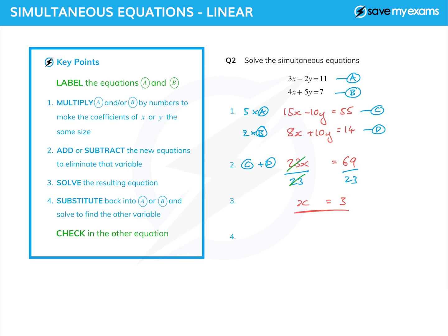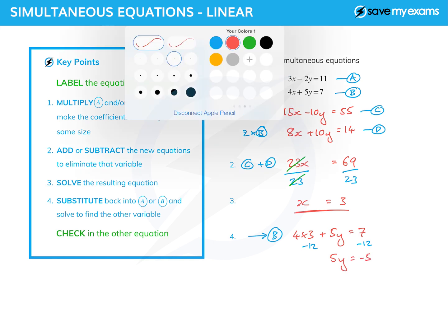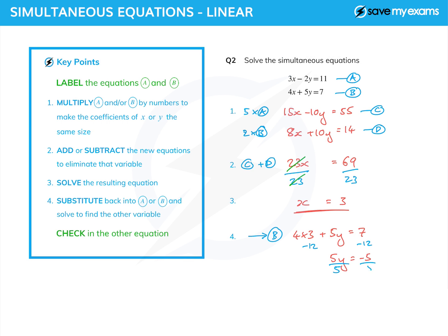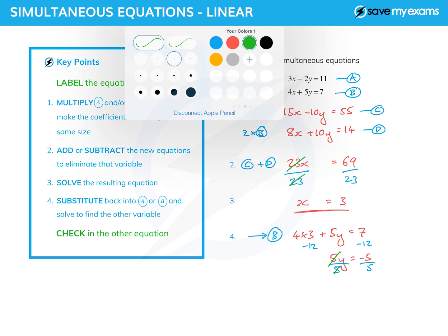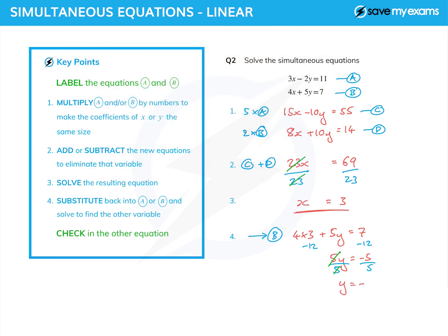And then I need to substitute something into one of my original equations. And I'm substituting the x into, well, I'm going to put it into equation B. Because although the numbers are bigger, there are no minus signs. And minus signs can cause problems. So I get 4 times 3, which is 12, plus 5y equals 7. And to solve this equation, I subtract the 12 from both sides, which gives me 5y equals minus 5. And then simply dividing by the 5 allows me to get y equals. The 5s on the left cancel. And on the right, I get y equals minus 1.